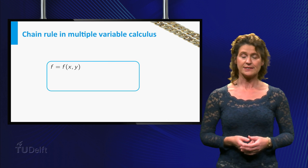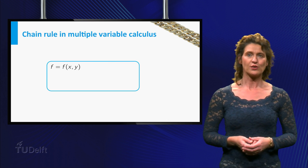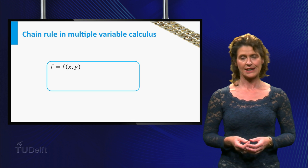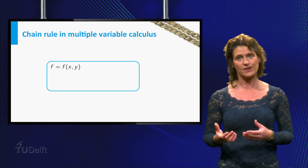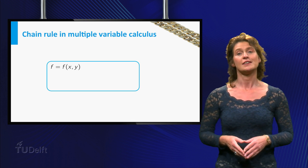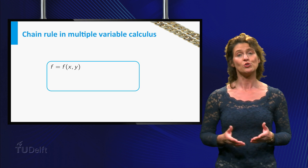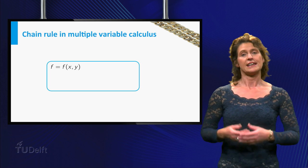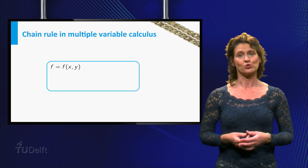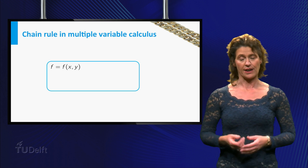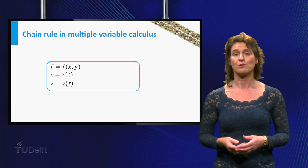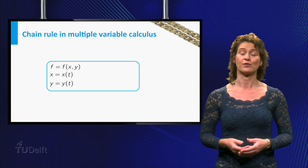To find this chain rule, let's look at a function of two variables and suppose these variables themselves are both functions depending on some new variable. Let's say f is the function depending on two variables x and y, and x and y both depend on the variable t.